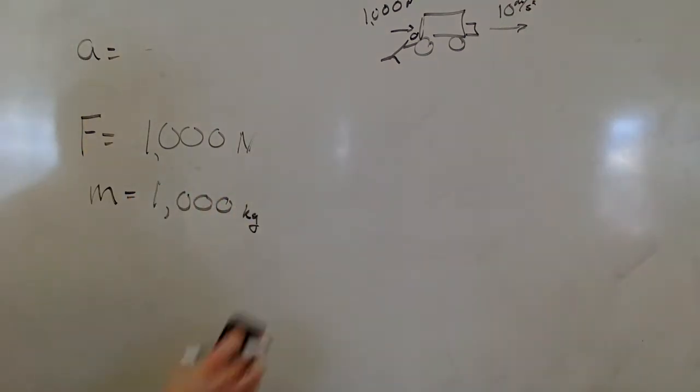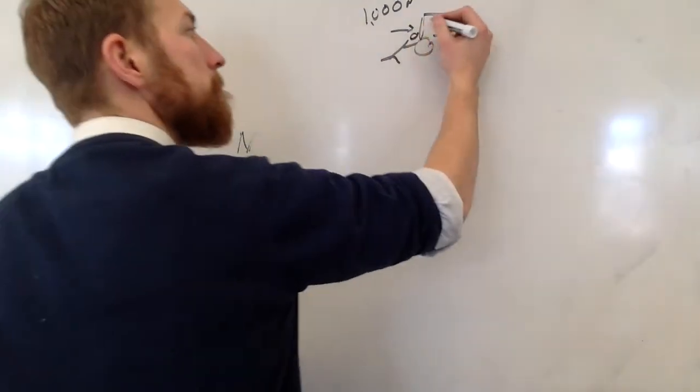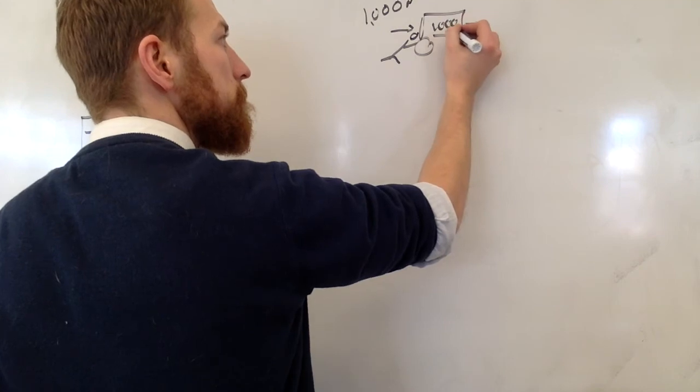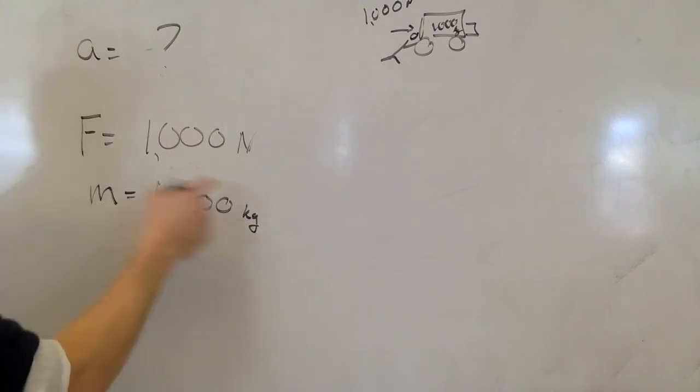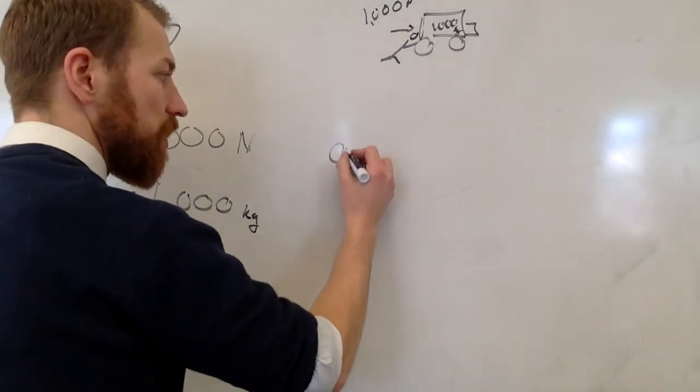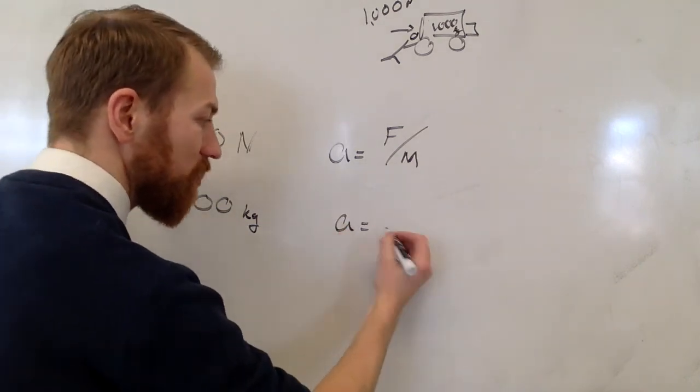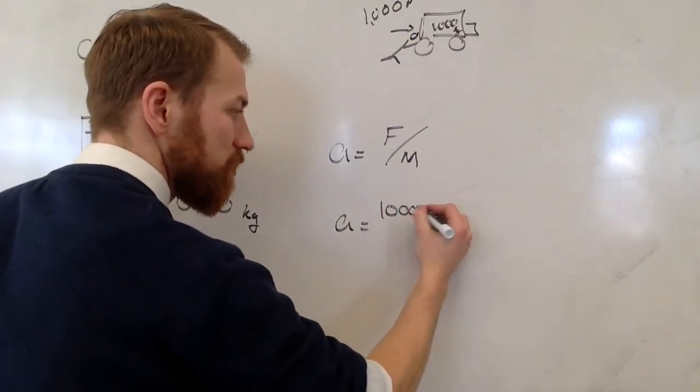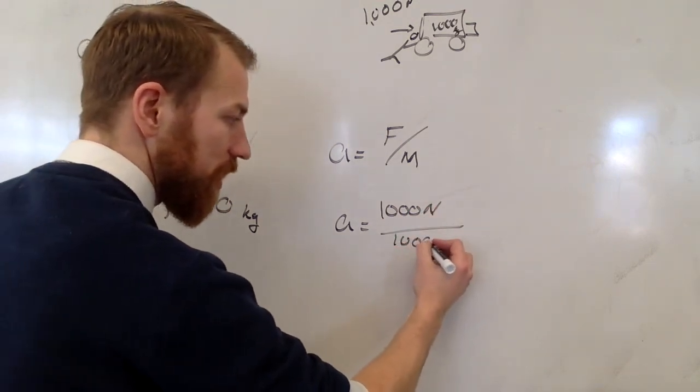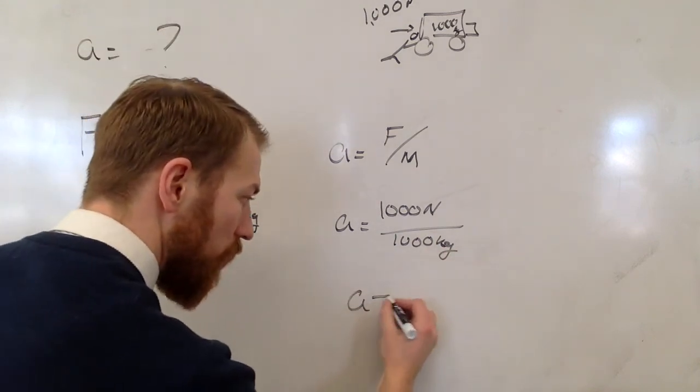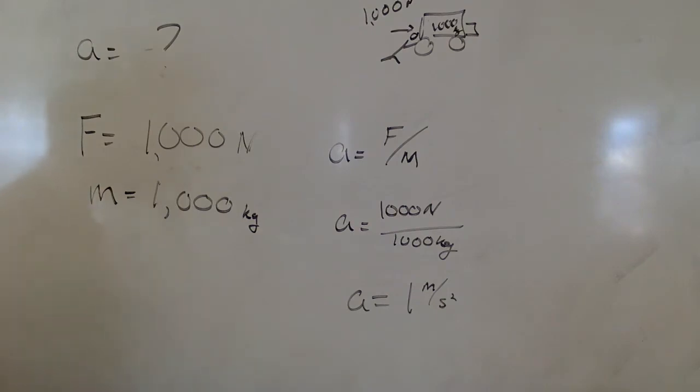A force of 1,000, and I don't know the acceleration. I can solve it using the same process, where I don't know this, and I know these two, so I can just simply plug them in. A equals f over m. A equals 1,000 newtons over 1,000 kilograms. And I end up only accelerating at 1 meter per second each second, 10 times more slowly.